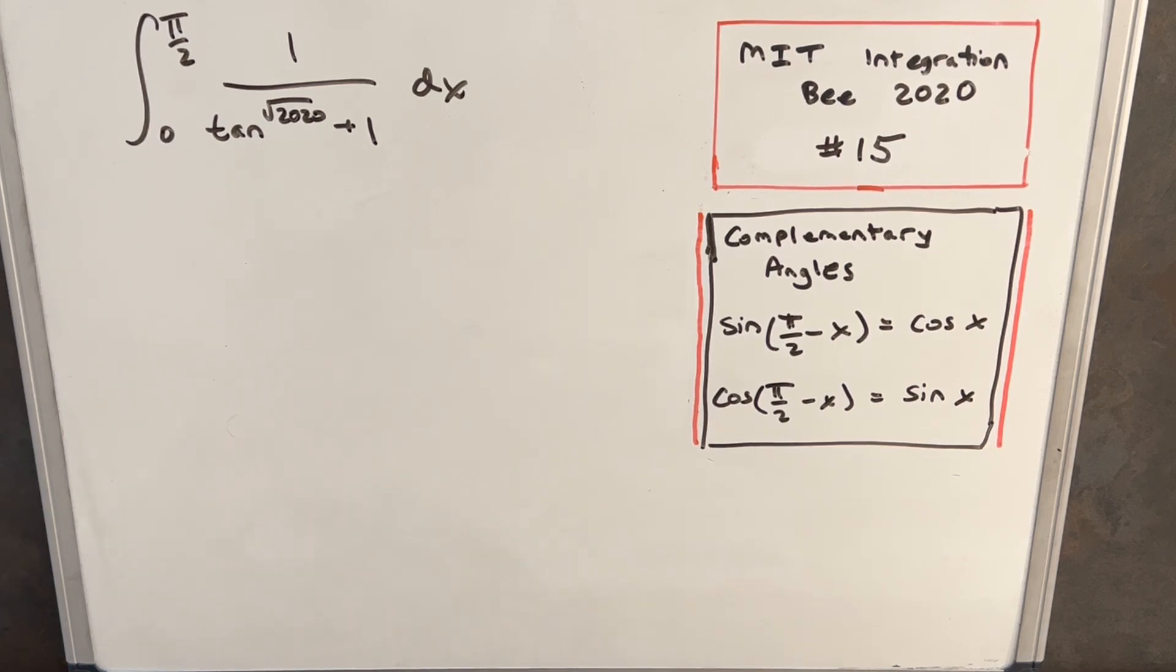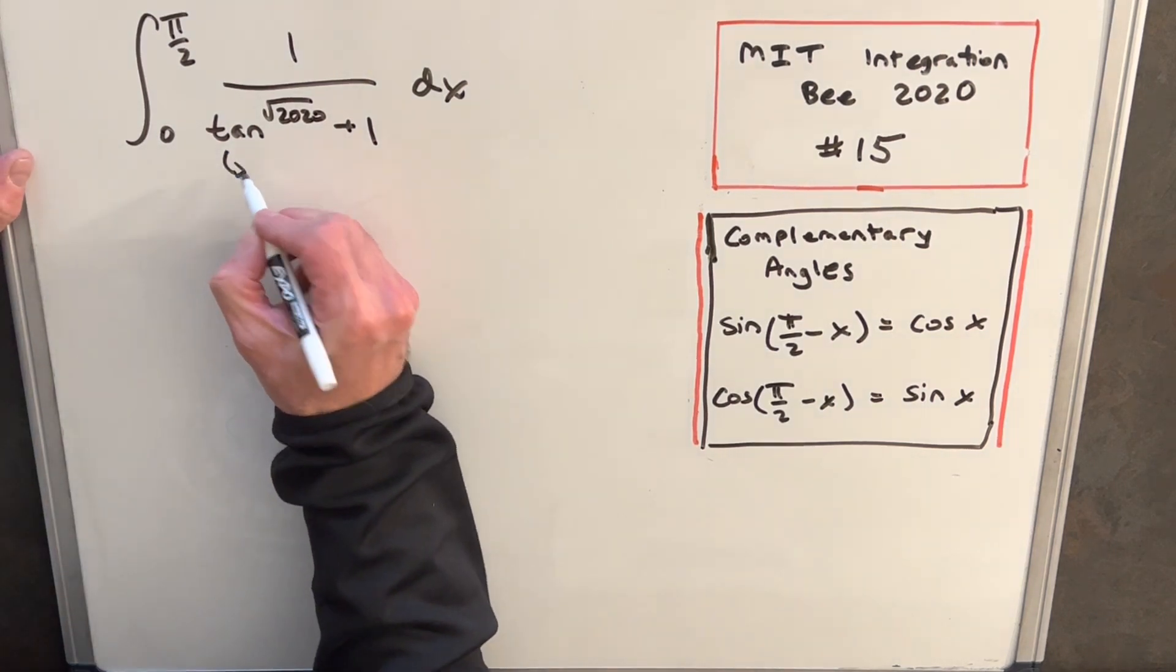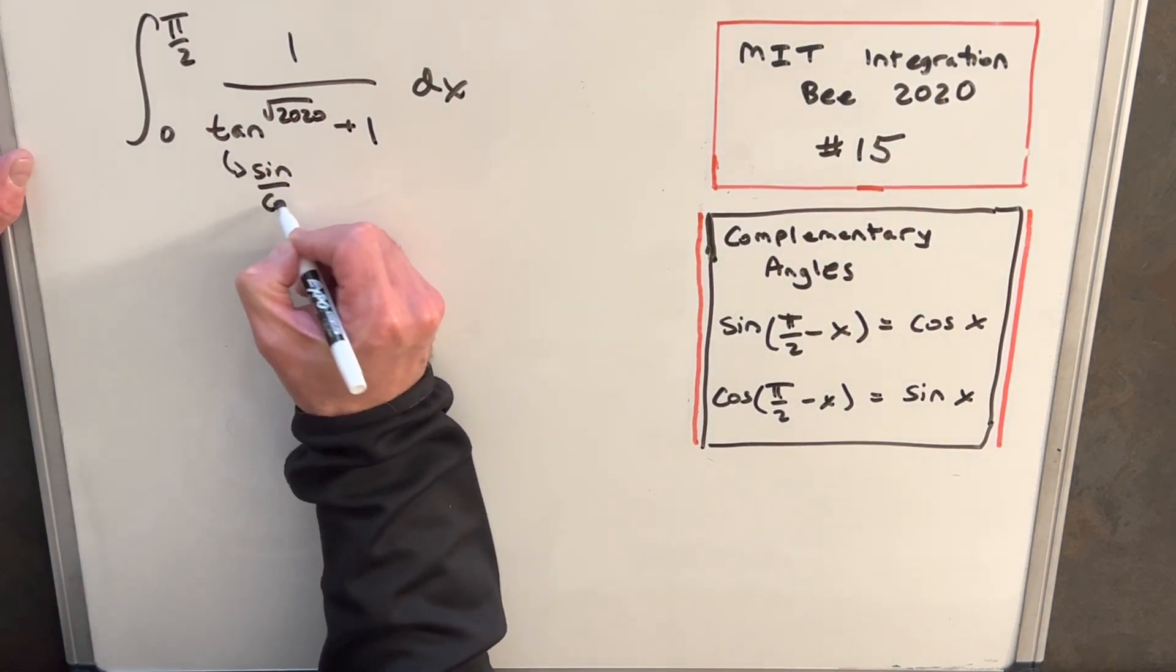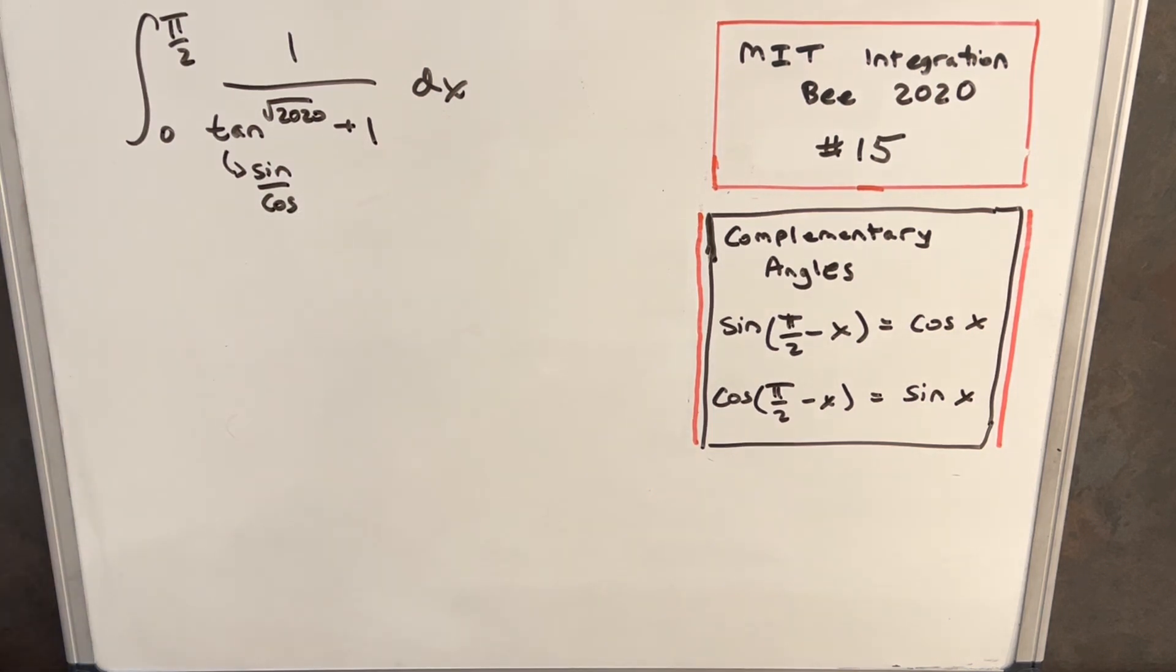For my first step, these look a little nicer if we can deal with sine and cosine instead of tangent. What I'll do is, and of course tangent is just sine over cosine, so if I multiply through by cosine to the square root of 20th, I think this thing will look a little bit nicer.